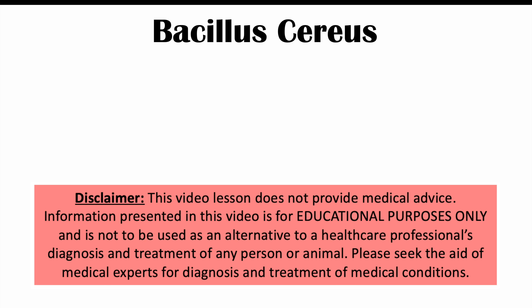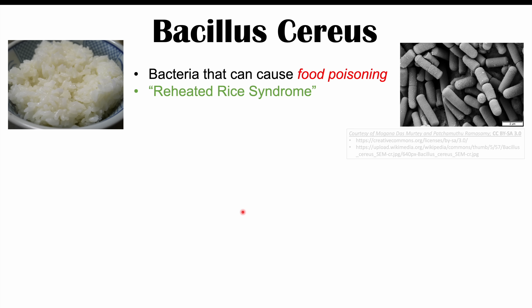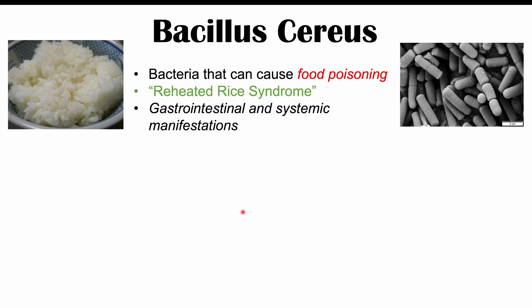We're talking about the bacteria Bacillus cereus and its associated food poisoning condition, which is known as Reheated Rice Syndrome. Bacillus cereus causes food poisoning and leads to gastrointestinal and systemic manifestations, which we'll discuss when we talk about signs and symptoms later.